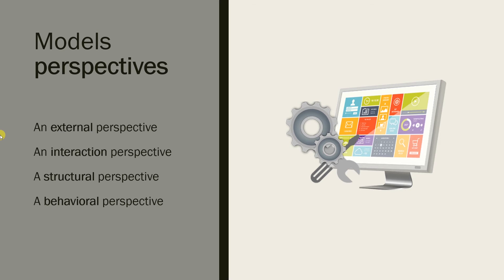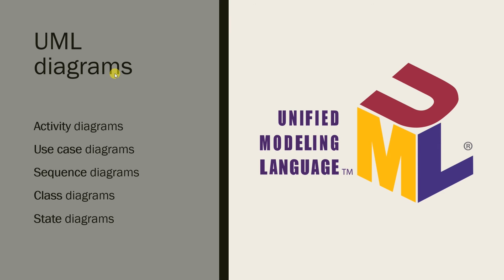Models can explain the system from different perspectives. These perspectives are the external, internal, structural, and behavioral. In the external perspective, you model the context or environment of the system. In the interaction perspective, you model the interactions between a system and its environment or between the components of a system. In a structural perspective, you model the organization of a system or the structure of the data processed by the system. In a behavioral perspective, you model the dynamic behavior of the system and how it responds to events.